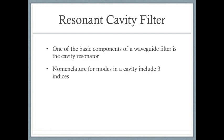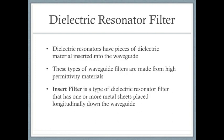There are many different types of waveguide filters. The first type is the resonant cavity filter. One of the basic components of a waveguide filter is the cavity resonator; a given geometry of a cavity will resonate at the desired frequency. The nomenclature for modes in the cavity includes three indices: the first two represent the longitudinal and wide direction of the wave, and the third index represents the number of half-wavelengths down the length of the waveguide.